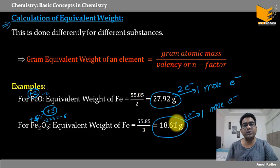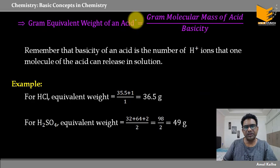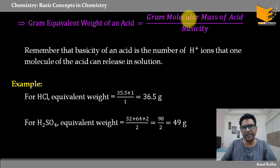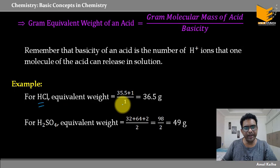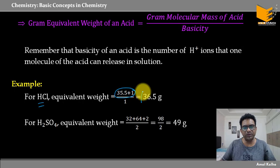I think equivalent weight should be easy to understand — it tells us how many electrons were either given or taken. Agar koi acid hai, toh equivalent weight = gram molar mass of acid divided by basicity. Basicity is basically the number of H⁺ ions it gives. HCl ki basicity 1 hai — 1 HCl gives 1 H⁺. So equivalent weight of HCl = molar mass / 1 = 36.5, which is also its molecular mass.